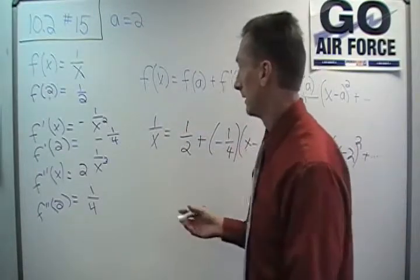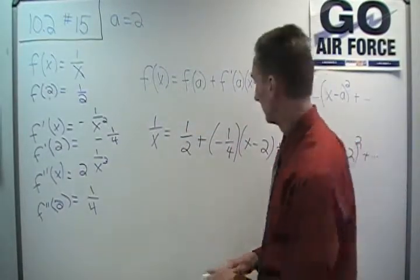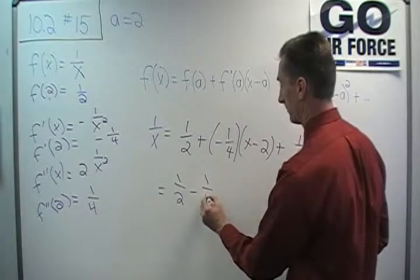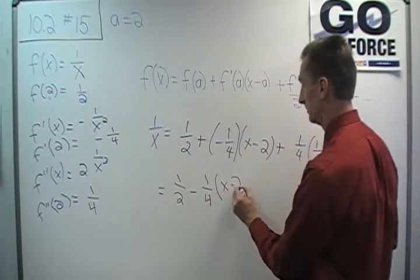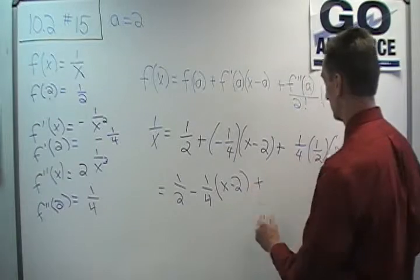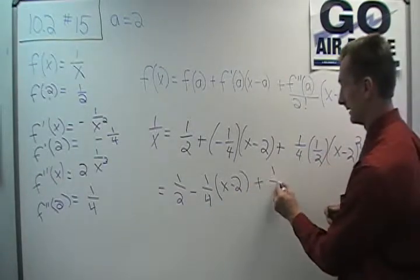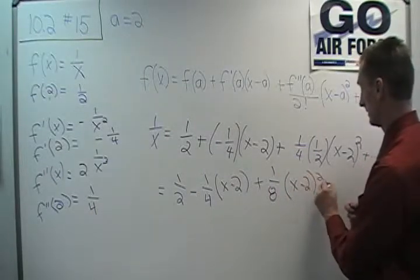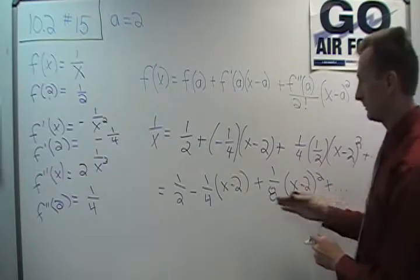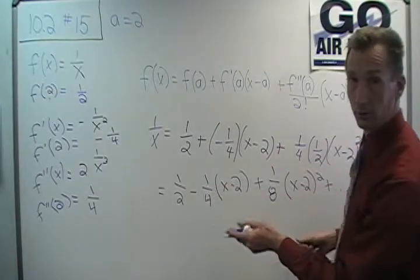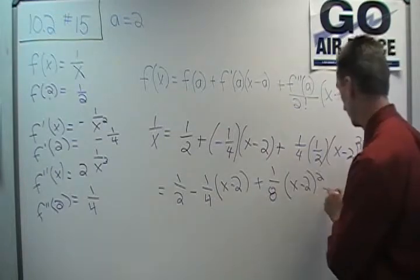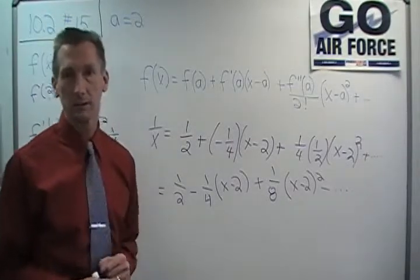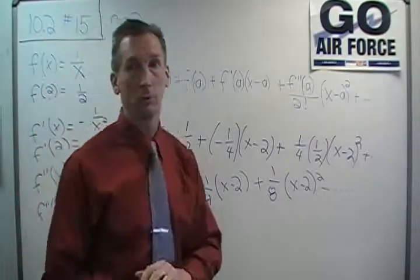You know, we could do some algebra and simplify this thing a little bit. Let's go ahead and do that. Okay, so this equals 1 half minus 1 fourth times x minus 2 plus 1 fourth times 1 half is 1 eighth times x minus 2 quantity squared plus dot dot dot. Actually, we know that that next term is going to be minus, don't we, because we can see the trend happening here. Let's go ahead and make that a minus. And that is the Taylor series for the function 1 over x.